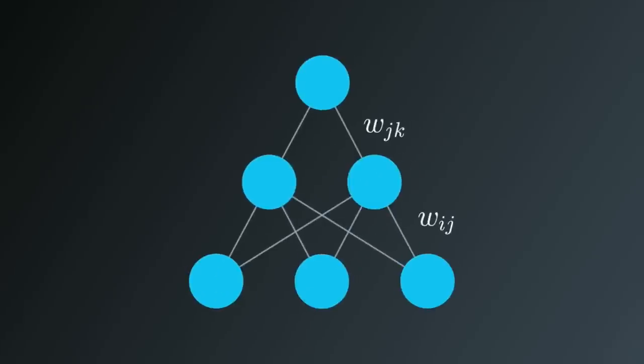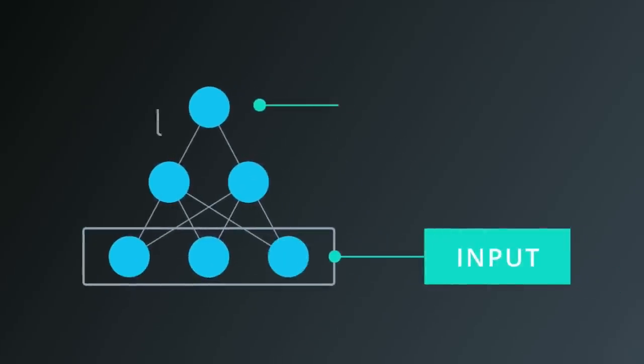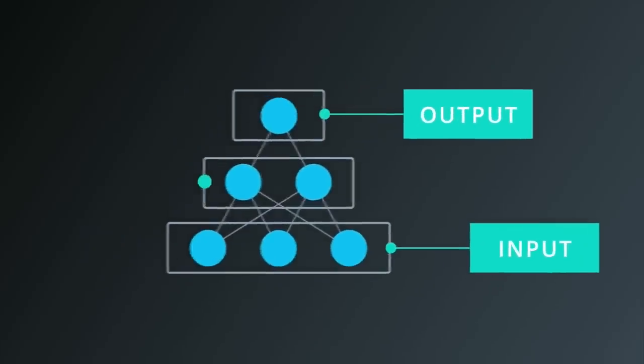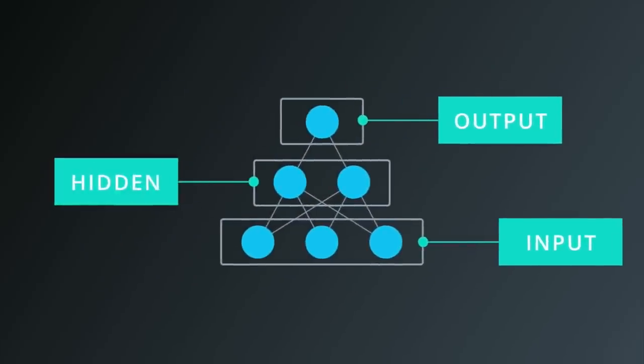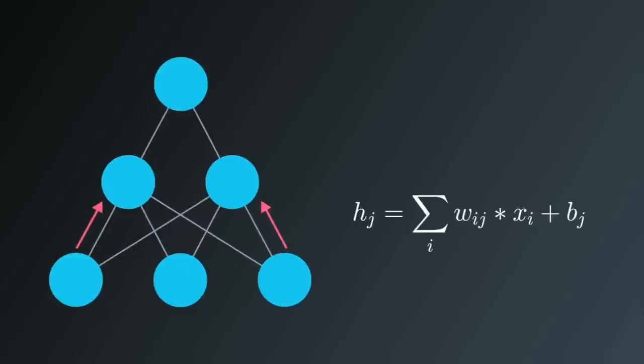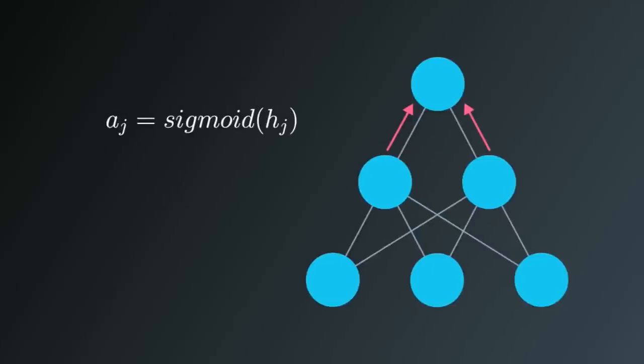The basic idea behind how a neural network learns is that we first have some input data that we've vectorized. Then we feed it into the network, which means we basically perform a series of matrix operations on this input data layer by layer. In the simple case, for each layer we just multiply the input by the weights, add a bias, apply an activation function to the result, and pass the output onto the next layer.